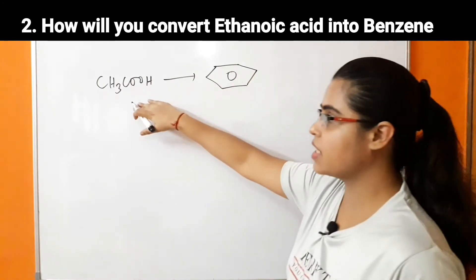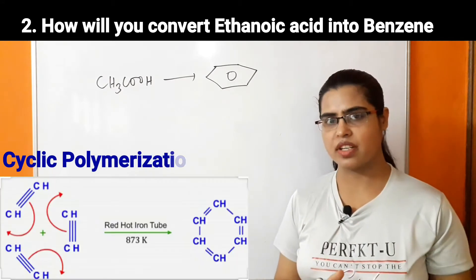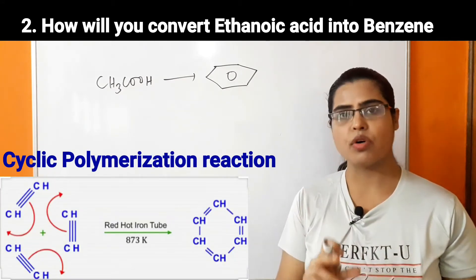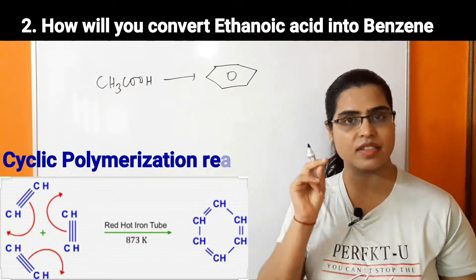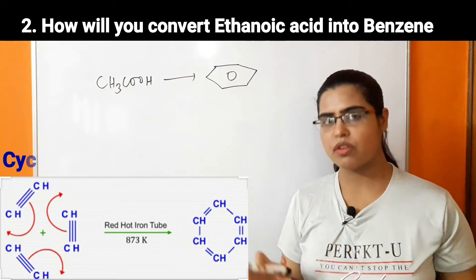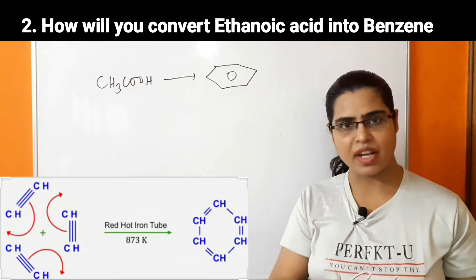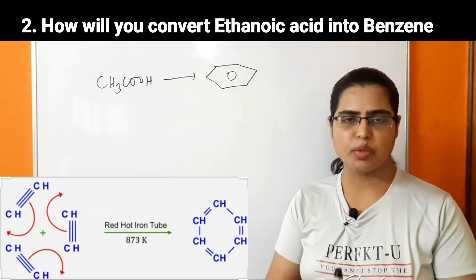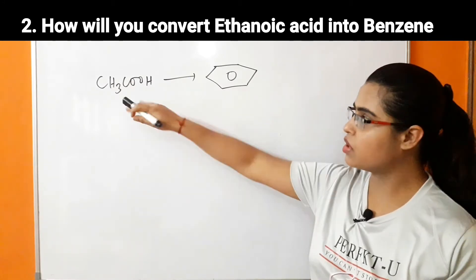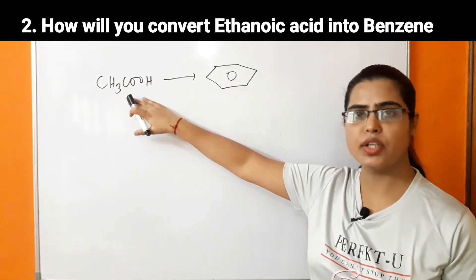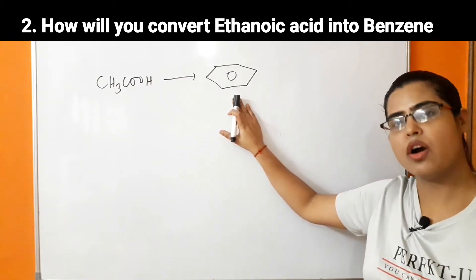We have earlier studied the cyclic polymerization reaction in which three moles of acetylene are used in the presence of a catalyst — a red hot iron tube — at a temperature of 873 Kelvin. A cyclic polymerization takes place, meaning we can directly prepare benzene from acetylene. So if we convert ethanoic acid into acetylene, benzene can be directly prepared.